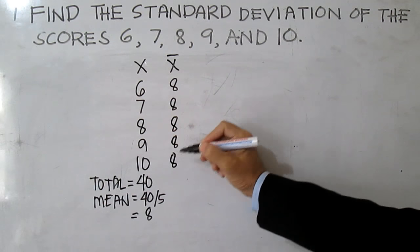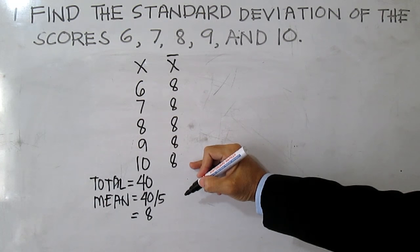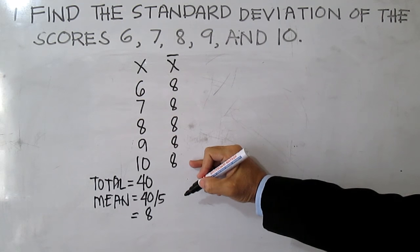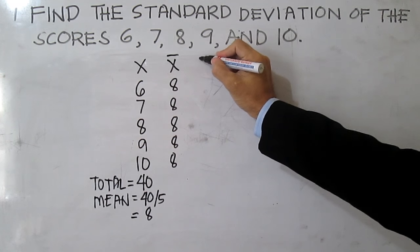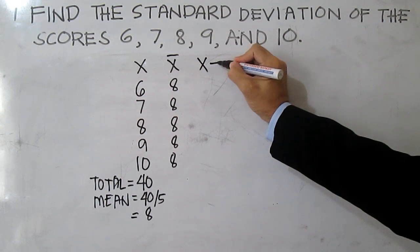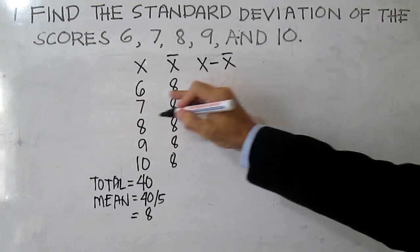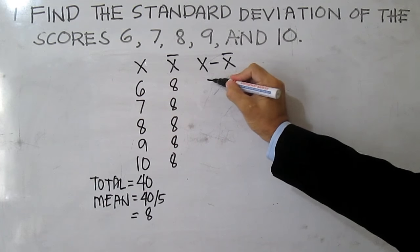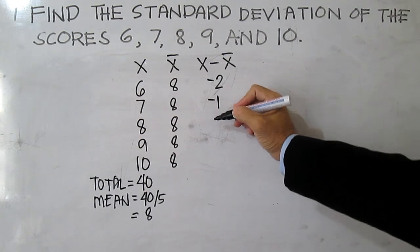So the mean is 8. Next we are going to get the difference of the score and the mean, or simply the deviation from the mean. 6 minus 8 is negative 2, 7 minus 8 is negative 1, 8 minus 8 is 0, 9 minus 8 is 1.